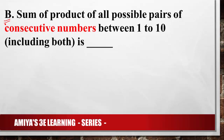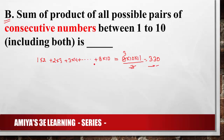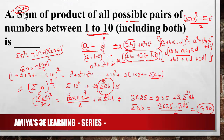Now solve question B: sum of product of all possible pairs of consecutive numbers from 1 to 10, that is 1×2 + 2×3 + 3×4 + ... + 9×10. Using the AP product series formula, this equals 9×10×11÷3 = 330. A detailed video on this concept is linked in the description.